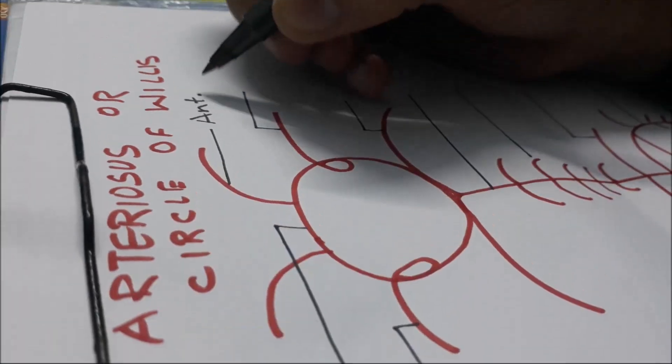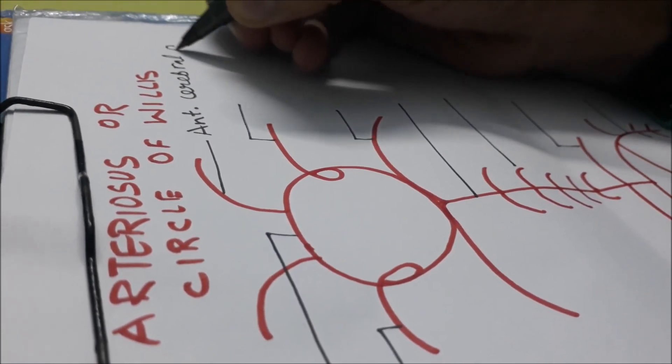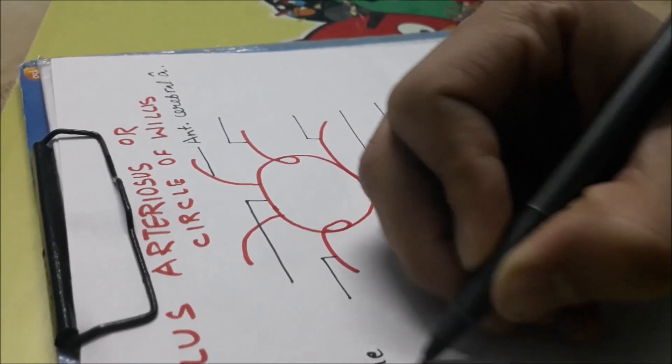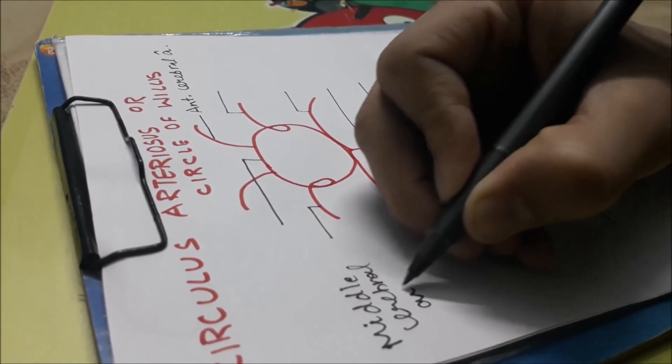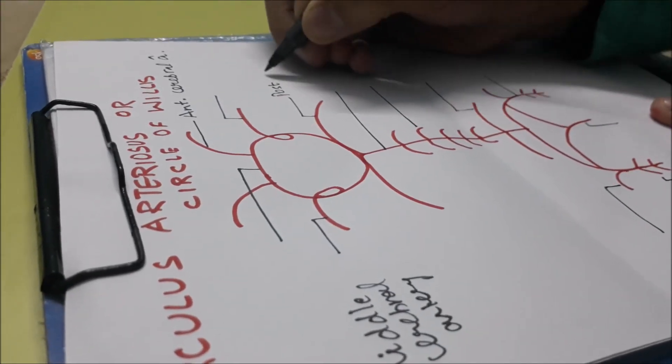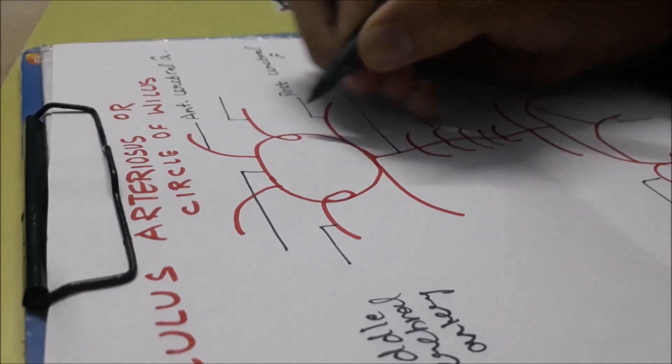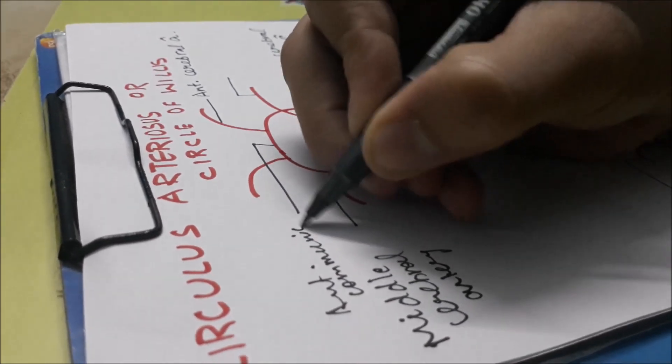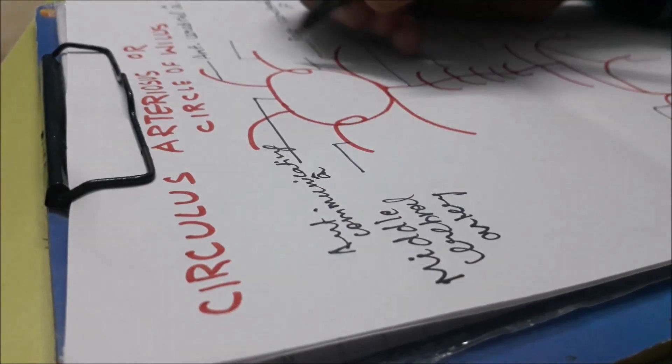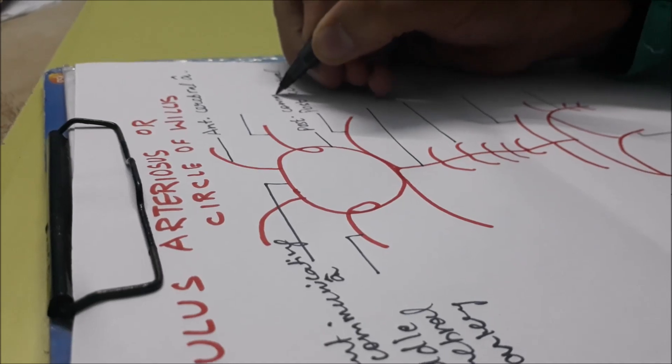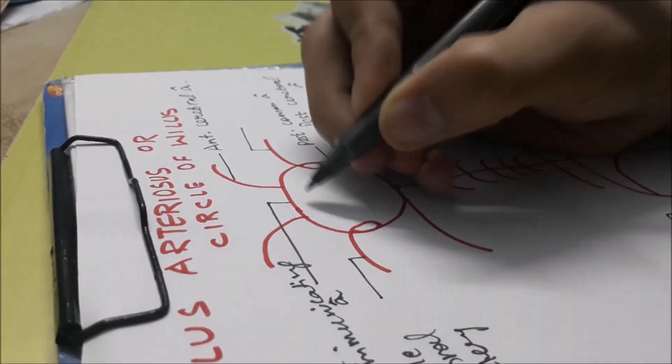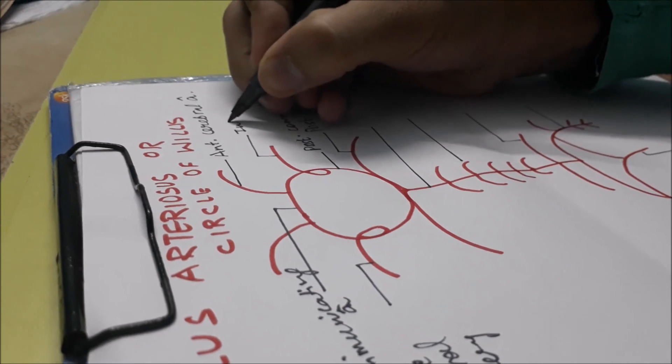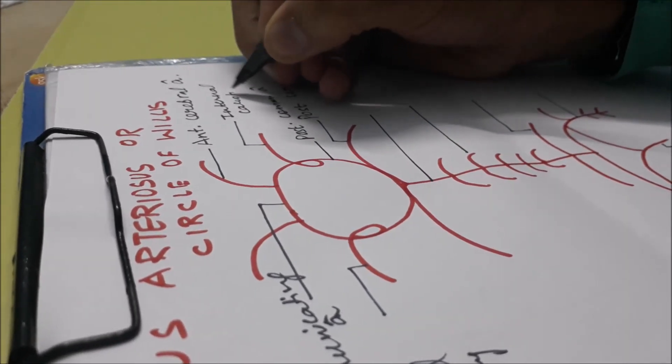These are the naming points. This is your anterior cerebral artery, and this is your middle cerebral artery, and this is your posterior cerebral artery. This is your anterior communicating artery. This is your posterior communicating artery connecting the anterior cerebral artery branches. And this is your internal carotid artery.